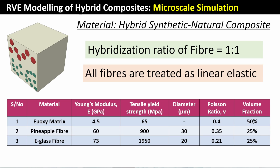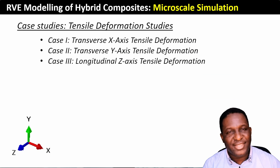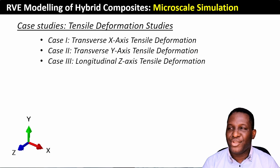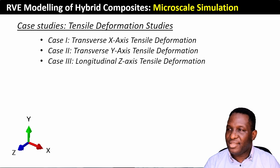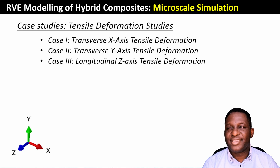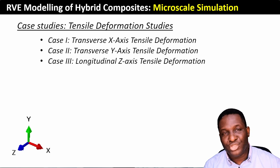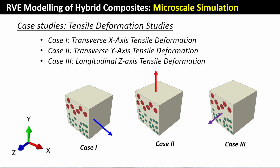The fibers are all going to be treated as linear elastic with plastic yielding. The three case studies we're going to study are: case one — tensile deformation in the x-axis; case two — deformation in the z-axis; and case three — longitudinal axis. I'm going to show how you can do all of this within Abaqus.